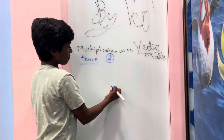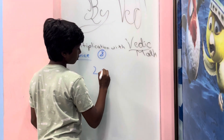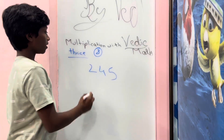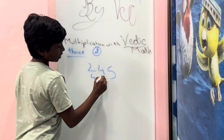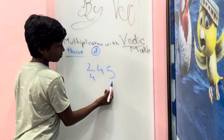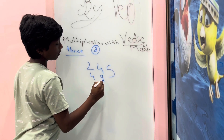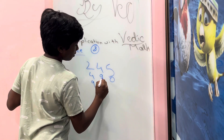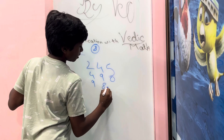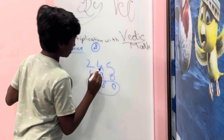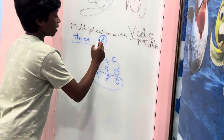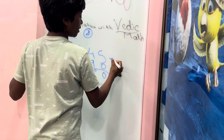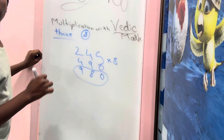For example, take 245. Here 2 doubled is 4, 4 doubled is 8 — but 8 is from group 2, so 8 becomes 9, giving 9 and 0. So 4 doubled is 8, and we get 9, 8, and 0 — so 980 is the answer for 245 into 8.